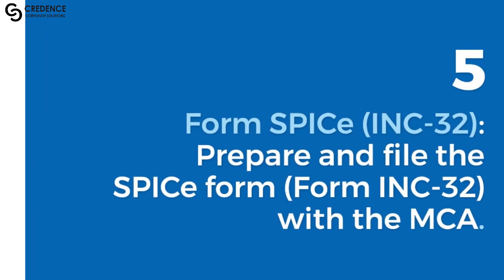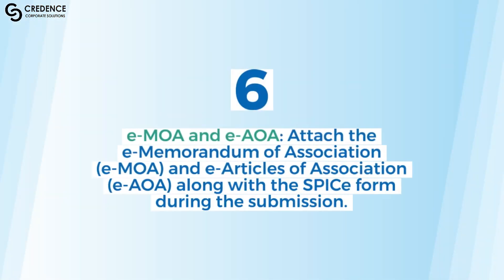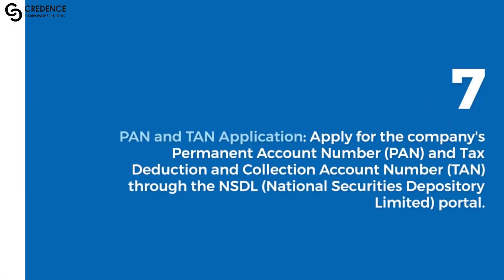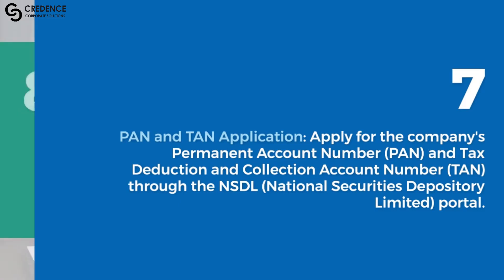Step 5: Prepare and file the SPICe Form 32 with the MCA. Attach the Memorandum of Association (MOA) and the Articles of Association (AOA) along with the SPICe form during the submission. Step 6: Apply for the company's Permanent Account Number (PAN) and Tax Deduction and Collection Account Number (TAN) through the NSDL (National Securities Depository Limited) portal.